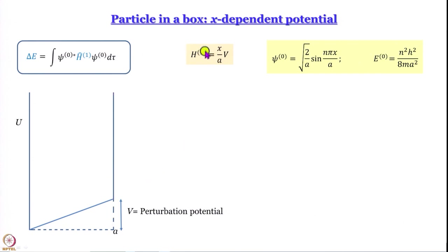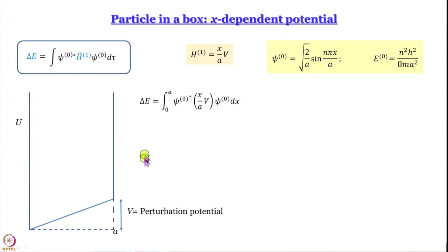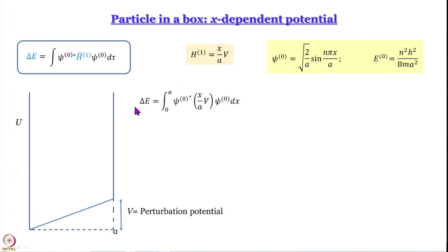We take this expression for the first order correction to the Hamiltonian and plug it into the delta E expression, also using psi 0th. Delta E becomes the integral from 0 to a of psi 0th* (which equals psi 0th since it is real) multiplied by (x·V/a) multiplied by psi 0th, integrated over x from 0 to a. Since V and a are constants, they come outside the integral, giving a prefactor of 2V/a².